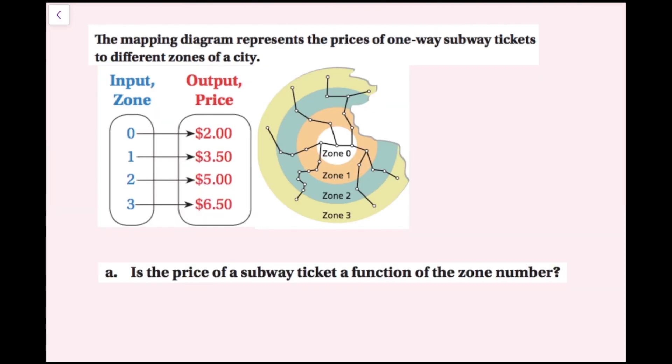For this example, we have a mapping diagram that represents the prices of one-way subway tickets in different zones of a city. So here's our mapping diagram. Part A is asking, is the price of a subway ticket a function of the zone number? Well, zone 0 goes to this $2 output price, zone 1 goes to $3.50, zone 2 goes to $5, and then zone 3 goes to $6.50. Because each input only has exactly one output, like the 0 is not going to two numbers, or the 1 is not going to more than one number, since all of these are going to just one number in the mapping diagram, we know that this is going to be a function.